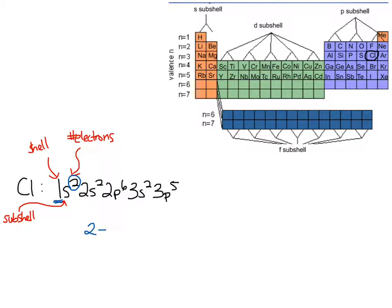There are two electrons in the first shell. For the second energy level, I go everywhere there's a 2 in front. Here's a 2 in front, and here's a 2 in front — both subshells are in the second energy level. There are two electrons in 2s and six electrons in 2p, so in total there are eight electrons in the second shell. Two of these electrons are in the 2s subshell and six are in the 2p subshell.